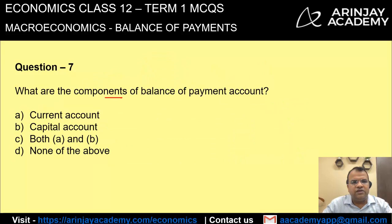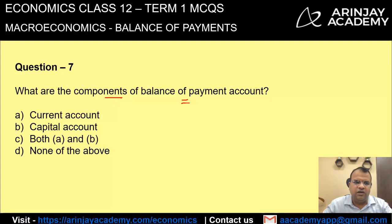What are the components of the balance of payment account? A current account, a capital account, or both? A balance of payment consists of both the current account and the capital account. Therefore, the correct answer is option C.